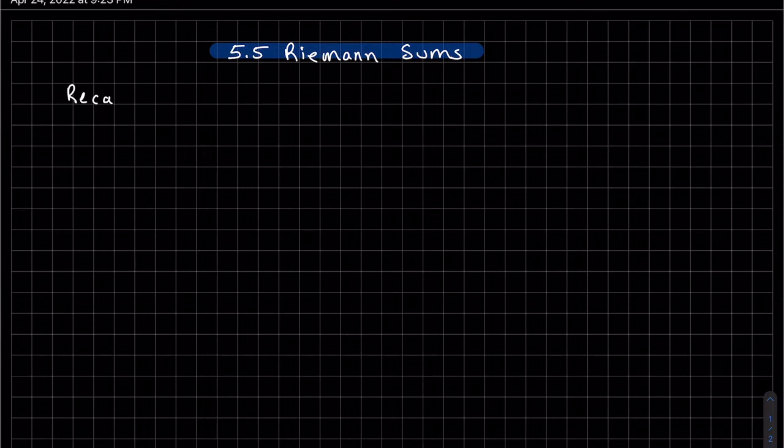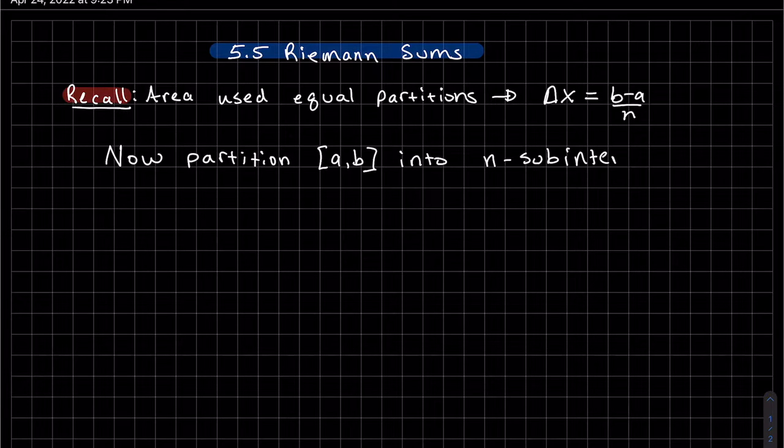This is Riemann sums. Recall the last video we used equal partitions. We had delta x was b minus a divided by n, and that created equal widths. Now we're going to partition [a,b] into n sub-intervals, but the width does not have to be equal.